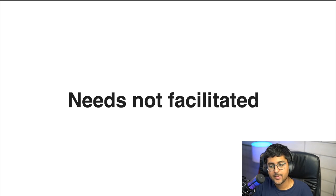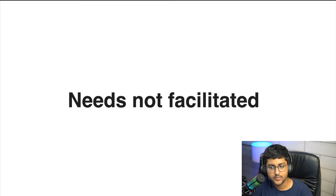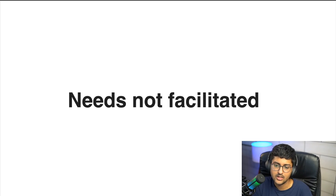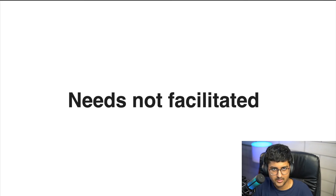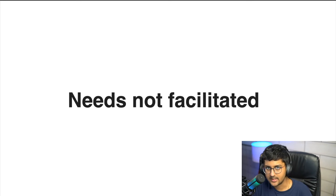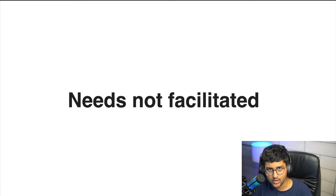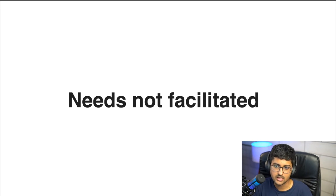Needs that are not facilitated: sometimes at your event there might be needs you were unable to meet — for example, no dairy-free products or no feeding room. For new event organizers this sometimes happens. The best way to deal with it is be honest and direct. Don't beat around the bush — just say, 'We really missed out on this and I apologize. We'll do our best at future events to make sure this doesn't happen again.' Try to see what you can do on the spot, but make sure you're honest and take note for future events.